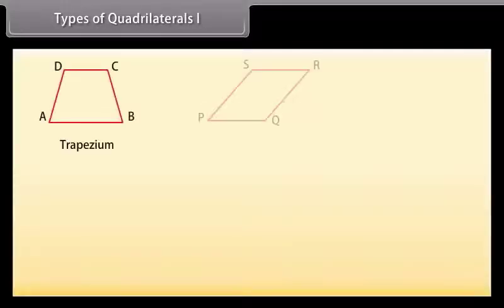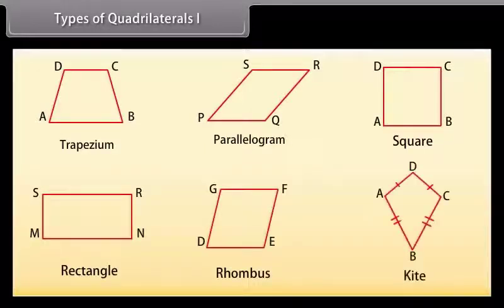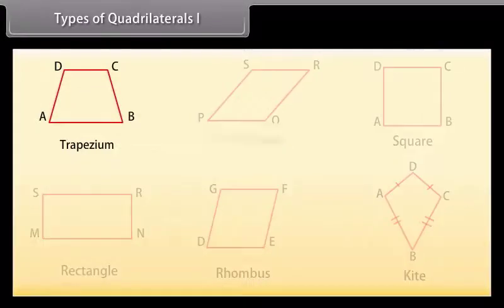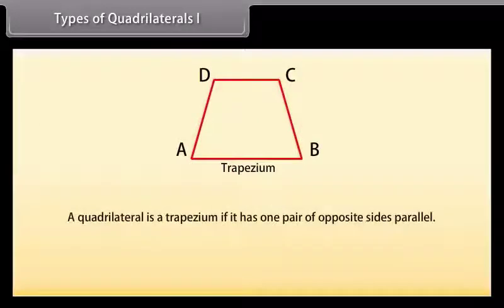Types of quadrilaterals: There are different types of quadrilaterals — trapezium, parallelogram, square, rectangle, rhombus, and kite. Look at these figures; we will go through them one by one. The first one is trapezium. A quadrilateral is a trapezium if it has one pair of opposite sides parallel.